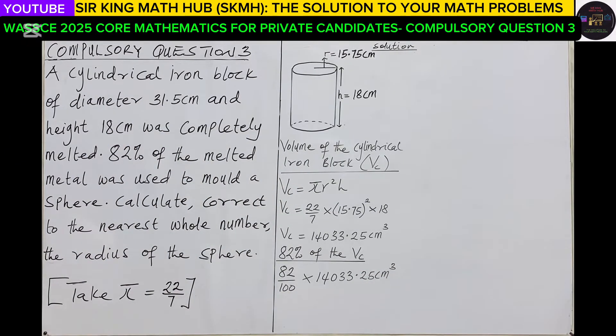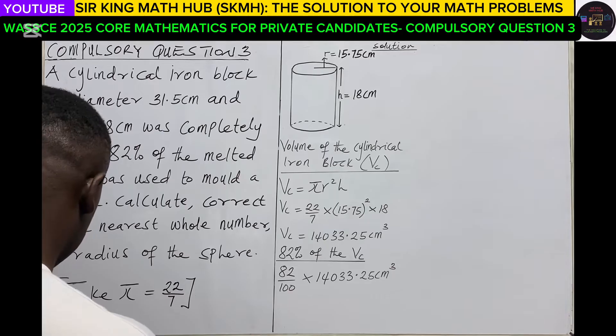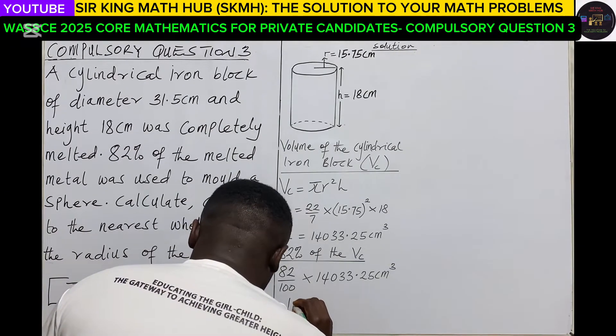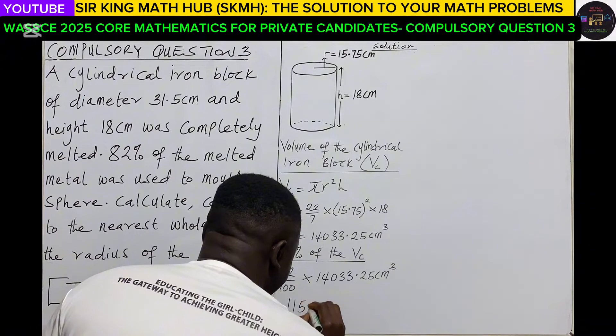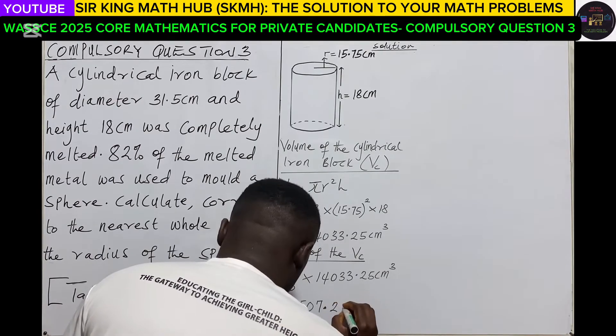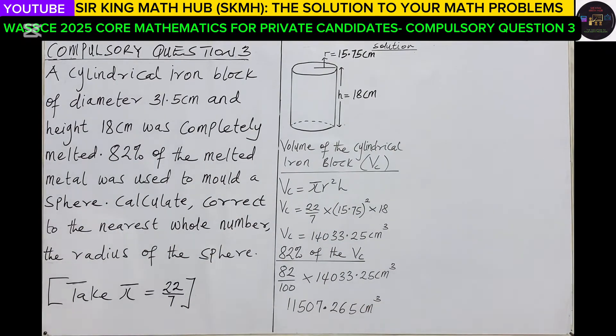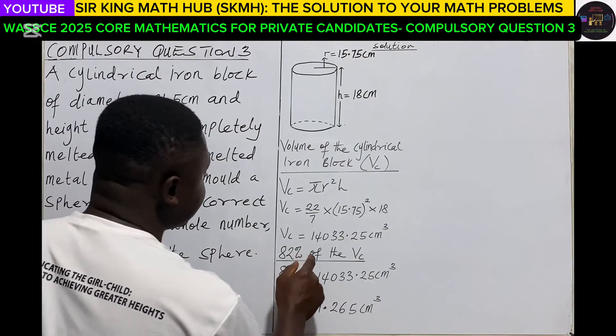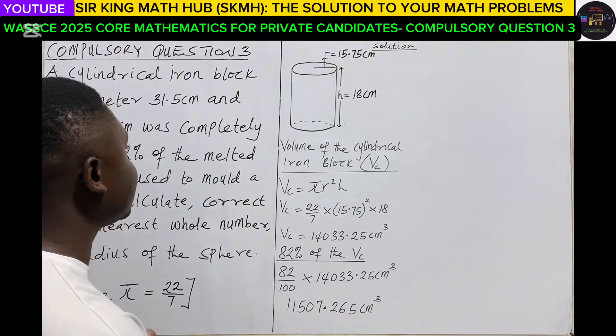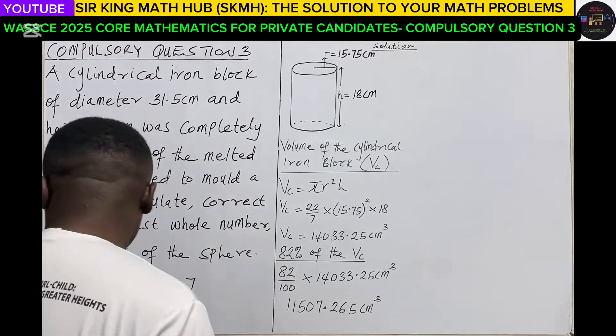So again using our calculator, 82% of 14033.25. So we have the same volume as the sphere. So let me get a space.